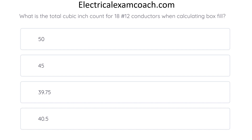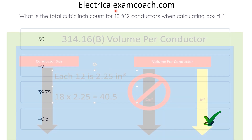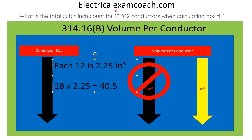What is the total cubic inch count for 18 number-12 conductors when calculating box fill? The correct answer is 40.5. To find this answer, we head to 314.16(b). We start on the left-hand side, find our size conductor, then come over to the cubic inches column. Each 12-gauge conductor is 2.25 cubic inches. We take our 18 conductors, multiply by 2.25 cubic inches, and we end up with 40.5 cubic inches. You can head to electricalexamcoach.com to learn about this subject and many more.